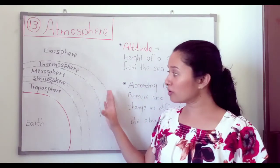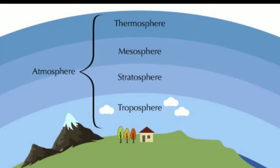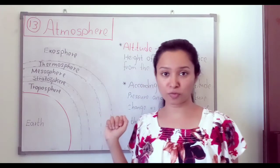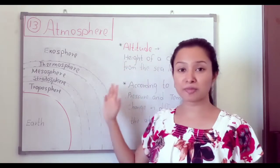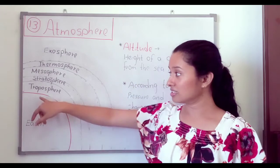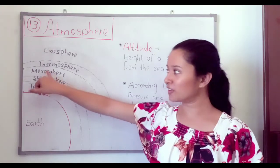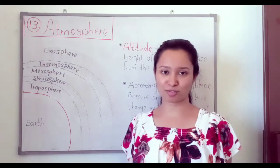These are the five layers from the earth's surface. The first one is troposphere, second is stratosphere, third is mesosphere, fourth is thermosphere, and the last one is exosphere. You have to remember the names of these five layers: troposphere, stratosphere, mesosphere, thermosphere, and exosphere.